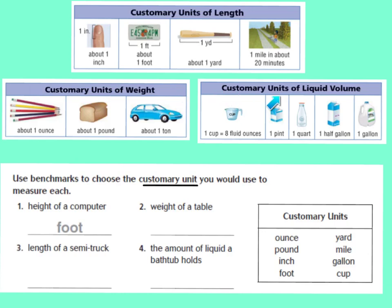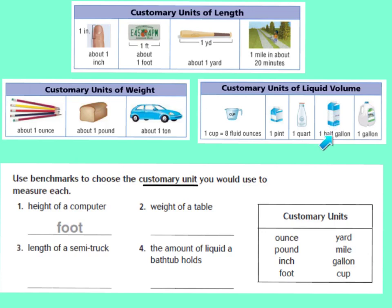Now we have our customary units of liquid volume — this is how you measure liquid. One cup is about eight fluid ounces, which is about a glass of water. One pint is a little bigger than the cartons of milk you get at school — about two of them put together. One quart is two pints. One half gallon is two quarts, and a gallon is what you usually see at the store when you buy milk.